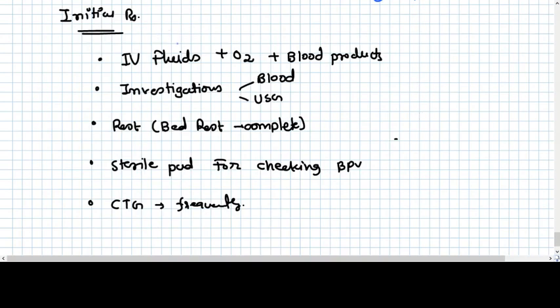When the patient comes with bleeding PV, initial treatment should be what? IV fluid, oxygen, blood products should be ready. Investigate. We should give complete bed rest. We should give a sterile pad for checking bleeding PV regularly. CTG should be done to monitor the fetus also.